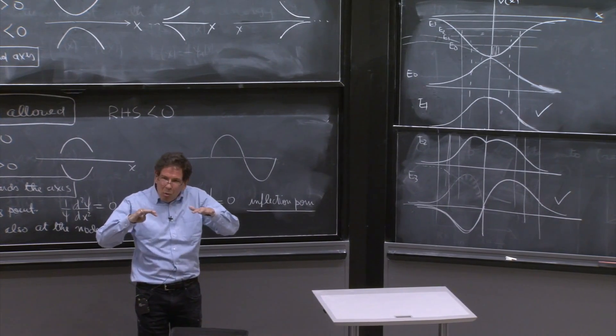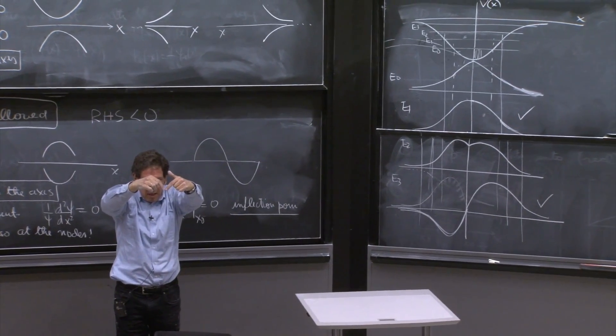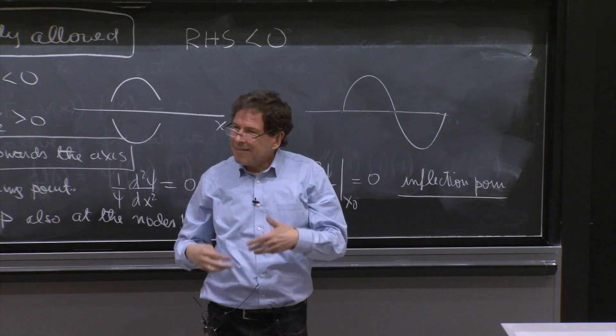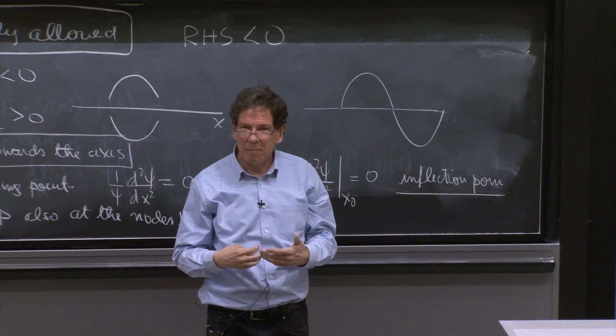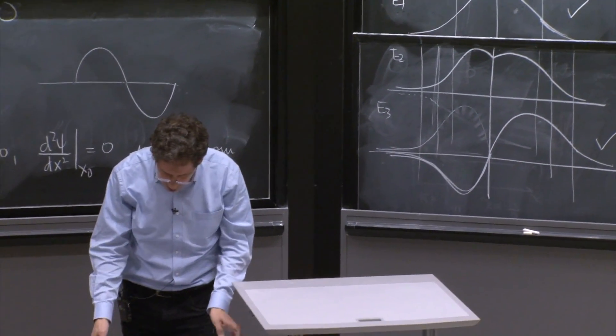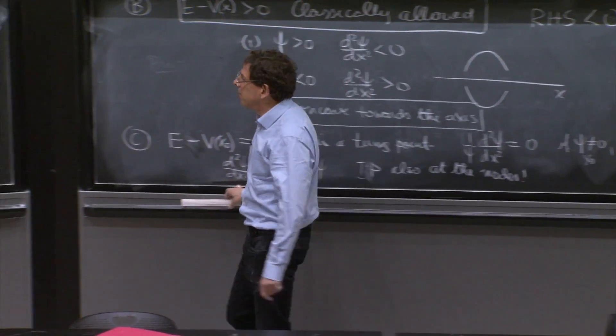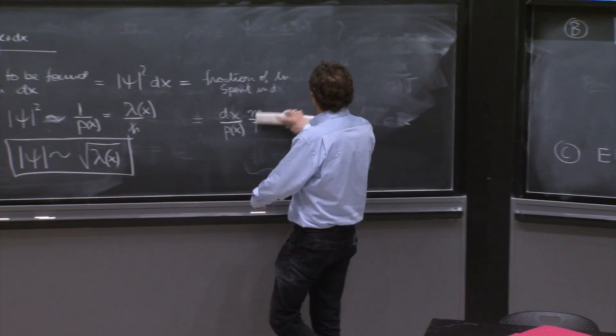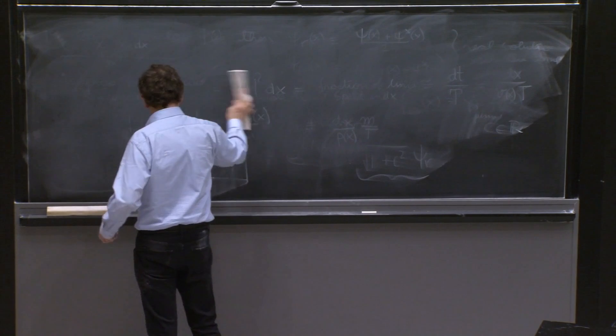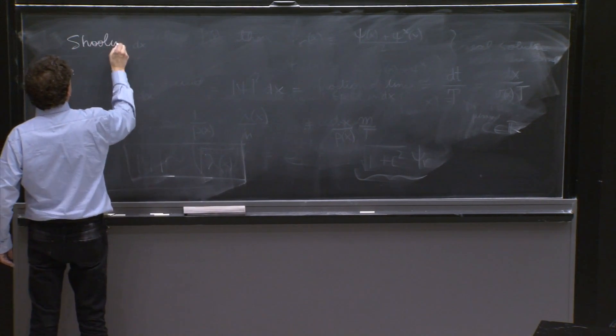That gives you the intuition how, as you sort of come from the end and you reach the middle, you sometimes match things or sometimes don't match. And it explains why you get energy quantization. The other way in which you're going to gain intuition is with the so-called shooting method, which is the last thing I want to discuss.